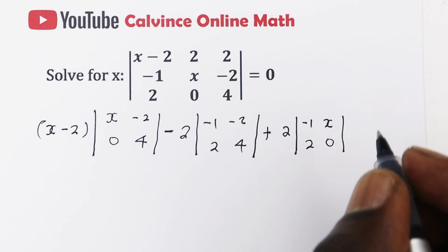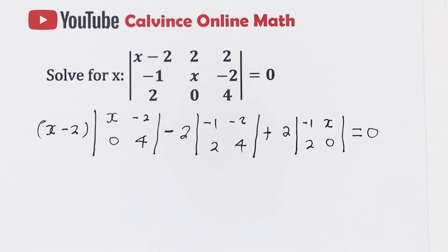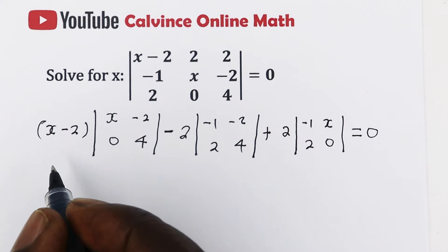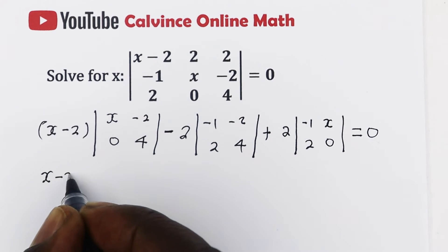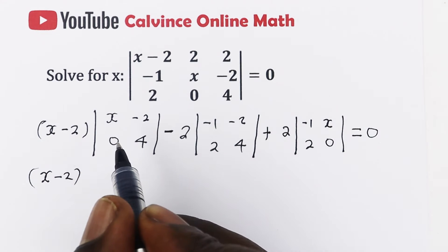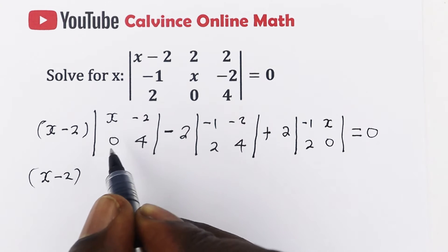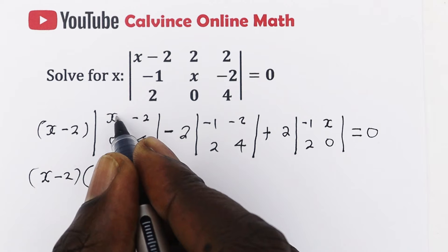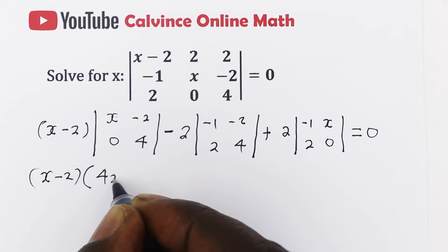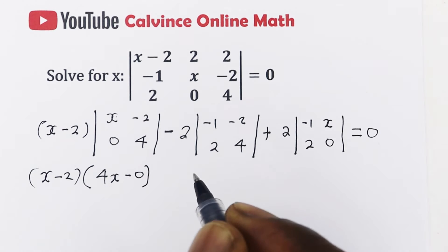When you evaluate that determinant, it is equal to 0 because we're dealing with a singular matrix. So let us simplify this. We have x minus 2, and then this determinant is obtained by getting the product between the main diagonal and subtracting that of the other diagonal. So in the main diagonal, we have x times 4, which is 4x, and then we have negative 2 times 0, which is just 0.